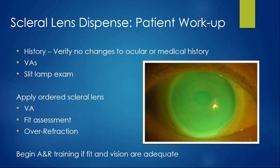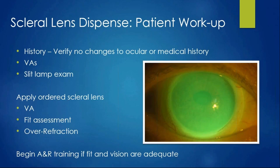When the patient returns for their dispense: verify any changes to history—ocular, medical, new medications. Check entering VAs in whatever they come in wearing, then do a slit lamp exam to ensure the cornea looks exactly as you left it two weeks ago before putting anything on. A lot can change in two weeks—patients can develop abrasions or peripheral ulcers. Apply the lens first before doing insertion/removal training. Do an initial VA check and full fit assessment—apical clearance, limbal clearance, landing zone overview—and compare to your previous exam findings. Document everything, then over-refract.